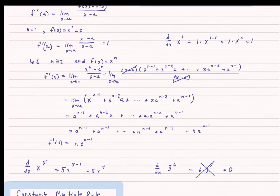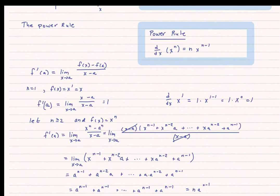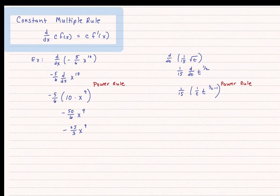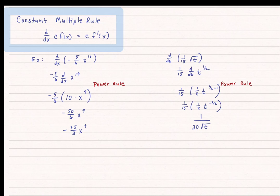I rewrite the square root of t as t to the 1/2 power since those are the same thing. I'll also state that the power rule works for n being any real number, not just integers. Using the power rule, I get 1/15 times 1/2 — that's my exponent — times t to the 1/2 minus 1, or 1/15 times 1/2 times t to the negative 1/2. I can rewrite this: generally if I started with square root form, I'll rewrite it that way. And t to the negative 1/2 equals 1 over the square root of t. That's my final answer.